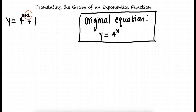Two is added to the x, and one is being added to the function as a whole. Based on the vertical and horizontal translation rules we covered, adding 2 to the x inside the function results in a horizontal translation 2 units to the left. And the 1 added to the entire function results in a vertical translation up 1 unit.